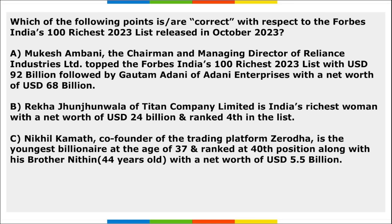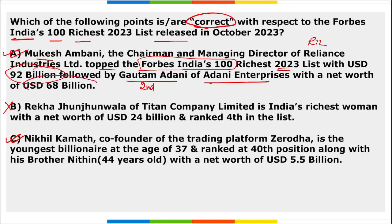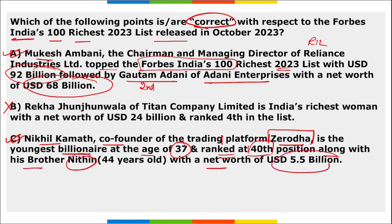First question: which among the following are correct with respect to Forbes India's 100 Rich List released in October? Options A and C are correct but B is wrongly mentioned. Option A states Mukesh Ambani, Chairman and Managing Director of Reliance Industries Limited, topped the Forbes India 100 Rich List 2023 with $92 billion net worth; on second position is Gautam Adani of Adani Enterprises with $68 billion. Option C states Nikhil Kamath, co-founder of trading platform Zerodha, is the youngest billionaire at age 37, ranked 40th along with his brother Nitin Kamath, with a net worth of $5.5 billion.